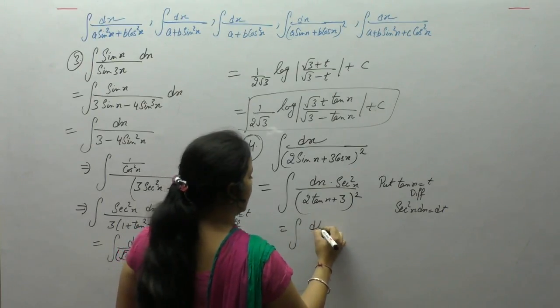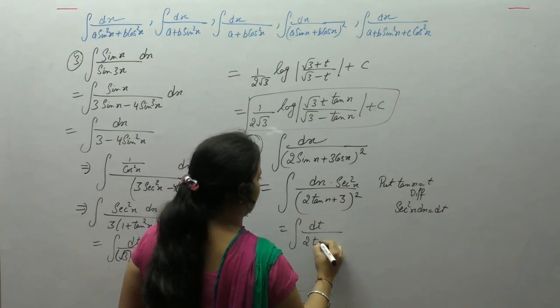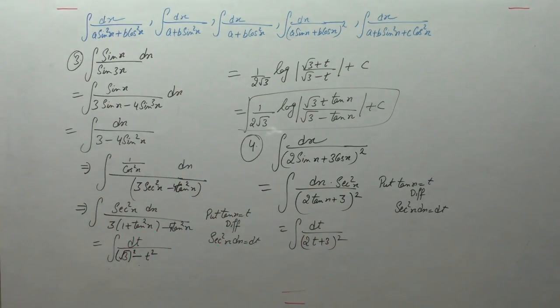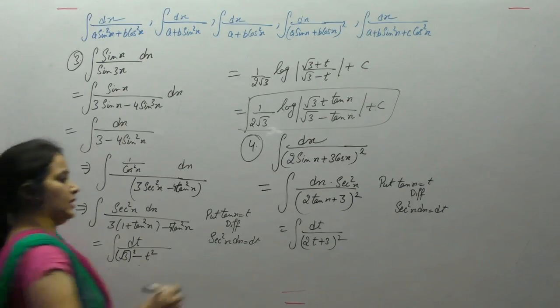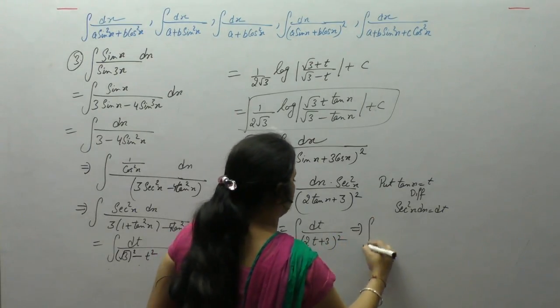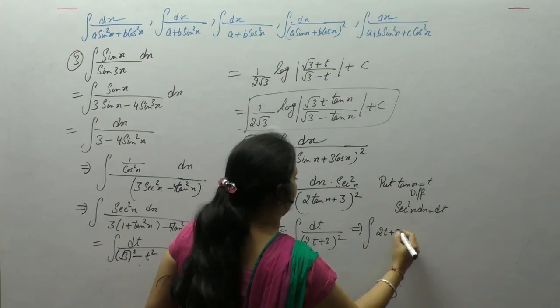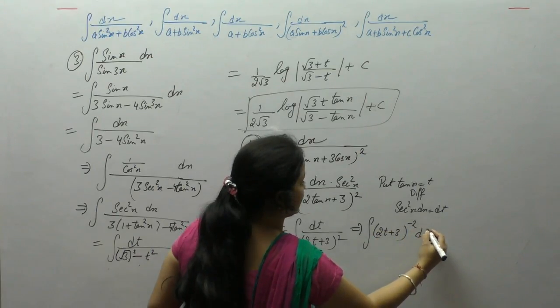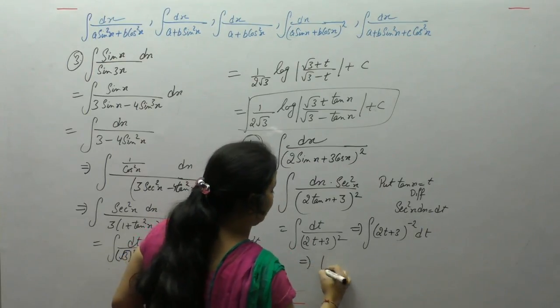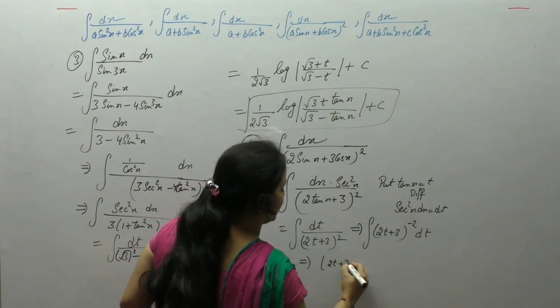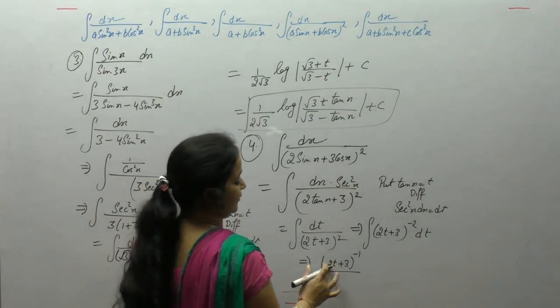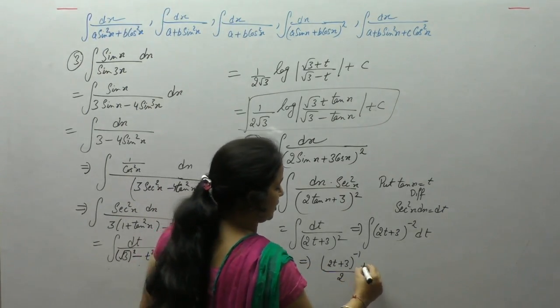dt upon 2t plus 3 whole square. We can write it as 2t plus 3 power minus 2, x power n is x power n plus 1, minus 2 plus 1 is minus 1, and derivative of 2t is 2 in the denominator.